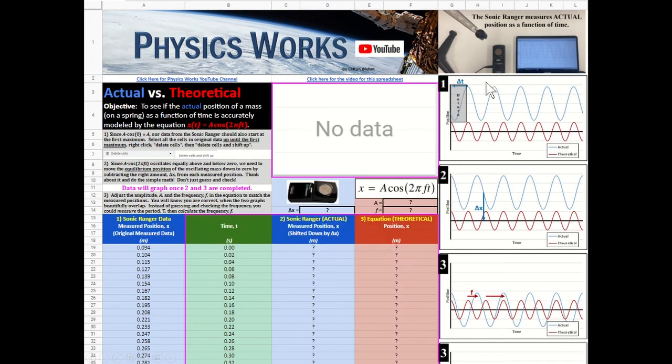The other thing we need to do is, that would just get this down to here. But now we need to play with the function x equals A cosine of 2 pi Ft.